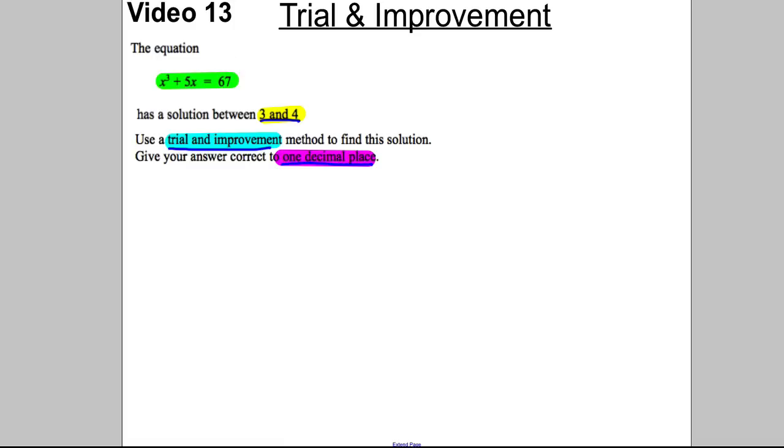What you do is you set up a table. Draw a table with three columns. The first column, a small column, the middle column a large column, and the end column a small column. Make a revision card of this example, and then you're going to do the exam questions afterwards. The first column is your x value. We are going to try x's until we get the x that gives us 67, the x to one decimal place that's closest to 67. In this column, we're going to work out the value of x³ + 5x to see how close it is to 67, which is what we want. And we're going to make a comment. So if we try an x that's too big, we're going to write too big. If it's too small, we're going to write too small.